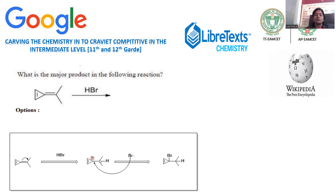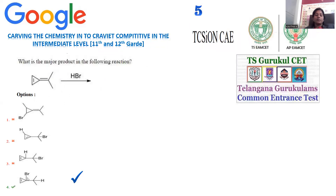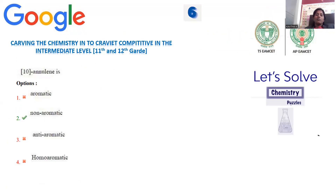This is the only preferable pathway, so for question number five, option number four is the correct answer. Moving on to question number six: 10-annulene is a ring-type structure. We need to identify what kind of aromaticity it possesses — whether it is aromatic, non-aromatic, anti-aromatic, or homo-aromatic.